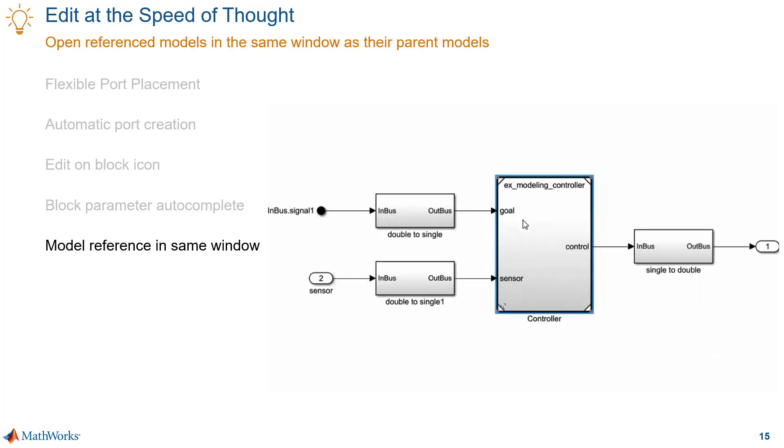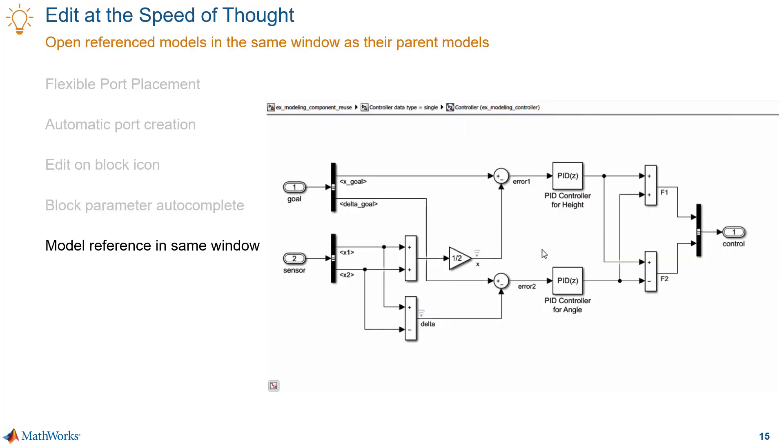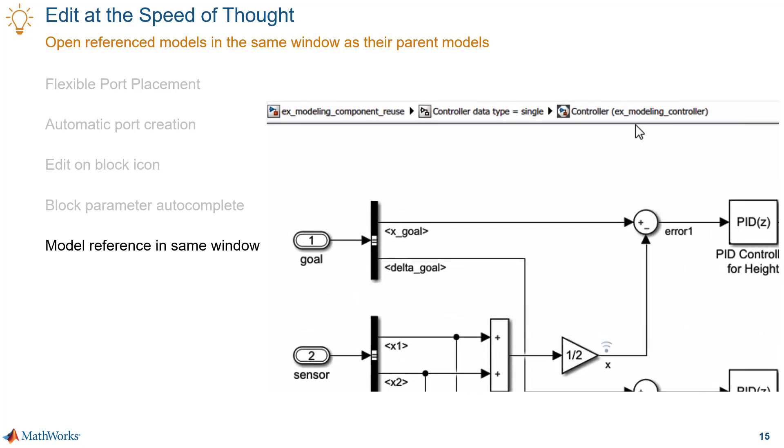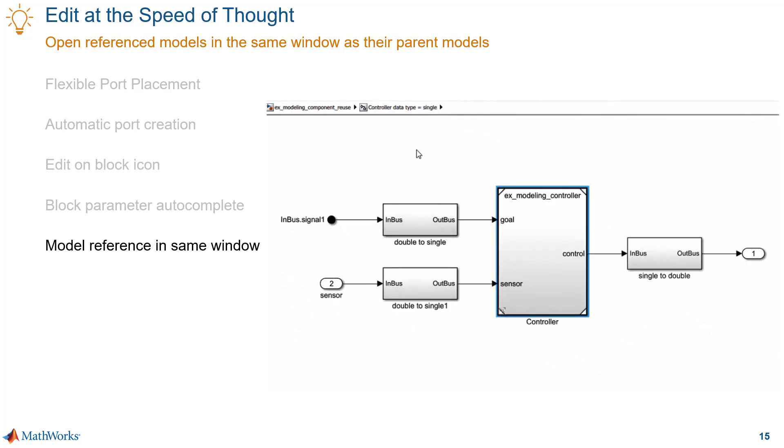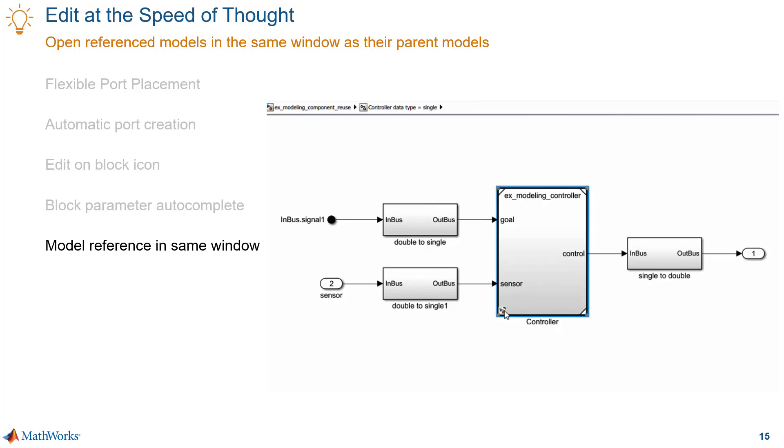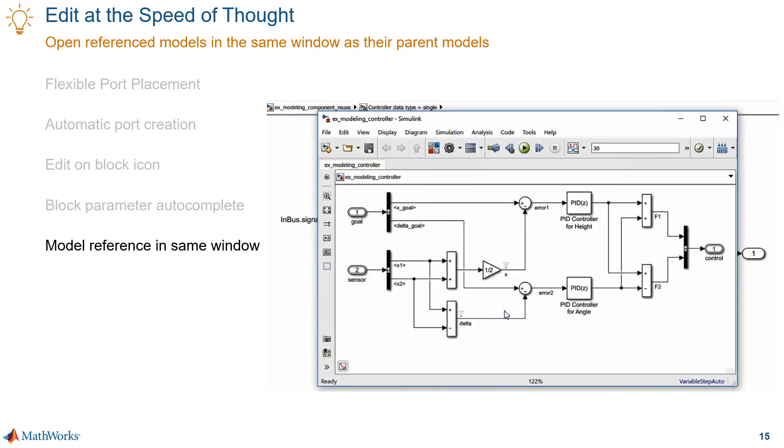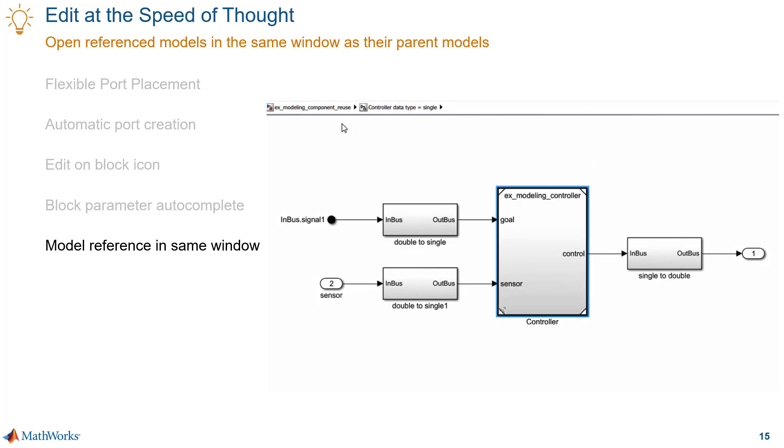We're also simplifying the navigation of deep model hierarchies by enabling you to open model references in the same window. You see the new model reference icon in the navigation breadcrumbs. If you want to look at a model reference in a separate window that's still possible. You do that by clicking the new icon on the bottom left and you see that the model reference opens in its own window and then you also have the breadcrumbs available for navigation.